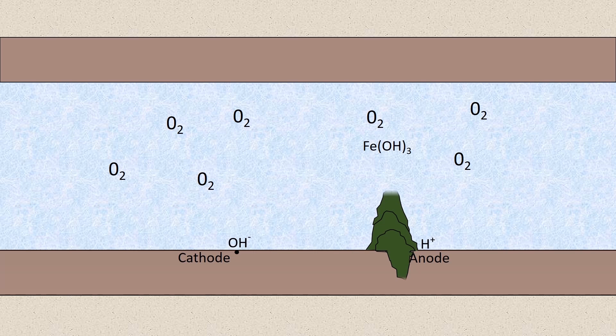And this all occurs at the anode in this system. So you can see here we have tuberculation occurring in the system which is going to reduce the hydraulic capacity of the system, and we also have pitting which is weakening the integrity of the pipe and is going to lead to a leak down the line.